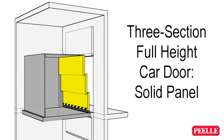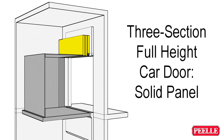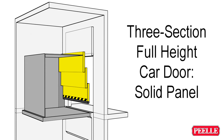Three-section, full-height car door. Three-section car doors, also known as reverse panel car doors, consist of three solid panels of equal height that completely cover the full opening height, with all chains and hangers inaccessible from within the car. These are used when there is minimal overhead space at the top floor and the elevator is rated to carry passengers.